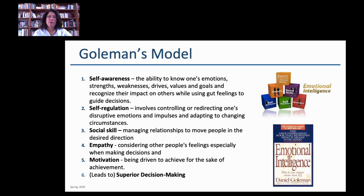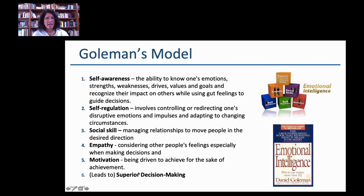In Goldman's model, he has six different building blocks. To consider yourself emotionally intelligent, you have to have an elevated level of self-awareness — understanding what you're feeling. Self-regulation means how to manage yourself. Then social skills to interpret others' feelings, as well as empathy to feel what they might be feeling. You also have to have motivation to react in an appropriate way, and that leads to your ability to reach a superior decision-making level — which links back to the connection between emotions and decision-making.